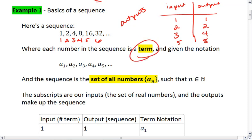And so as I was saying, each number up here is called a term. And we give it the notation a sub 1, a sub 2, a sub 3, a sub 4. And we say that the sequence is the set of all numbers a sub n, such that n is a natural number.